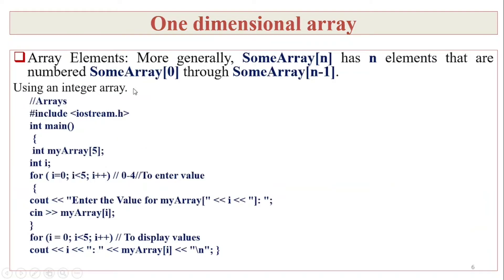A one-dimensional array has a first element and a last element. For example, int myarray[5] starts from index 0 up to index 4. Using a for loop with condition i less than 5, the last element is at index 4.